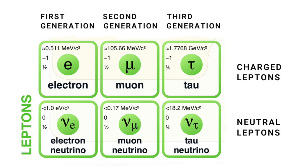There are six types of leptons known as flavors, grouped in three generations. The first generation leptons are the electron and the electron neutrino. The second are the muon and the muon neutrino. And the third are the tau and the tau neutrino. Electrons are the least massive of all the charged leptons. The heavier muons and taus rapidly change into electrons and neutrinos through a process of particle decay.